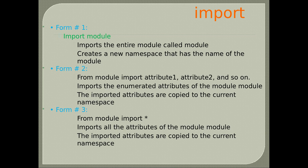Form 2: from module import attribute1, attribute2 — imports the enumerated attributes of the module; the imported attributes are copied to the current namespace. Form 3: from module import * — imports all attributes of the module into the current namespace. Example: x = 1, y = (1, 2). We can import the attributes of module 22 using the module name, then call x or y.